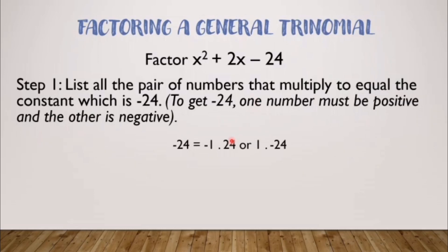We have negative 1 times 24 is negative 24, 1 times negative 24 is negative 24. Then we also have negative 2 times 12 or 2 times negative 12. We also have negative 3 times 8 or 3 times negative 8. And we also have negative 4 times 6 or 4 times negative 6.